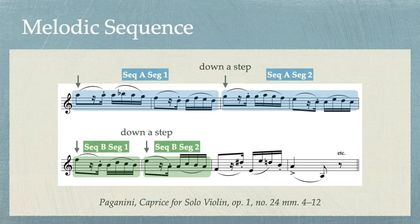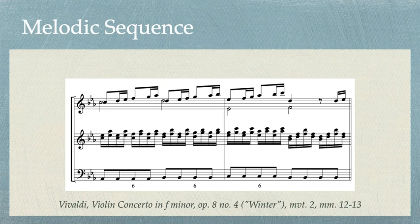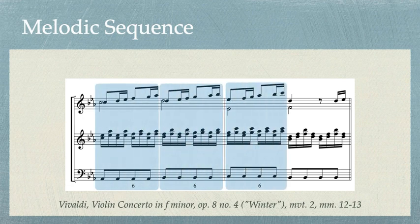Let's listen once more, now that we know what to listen for. Have a listen to this excerpt from Vivaldi's Violin Concerto in F Minor. See if you can hear and identify the sequence. Hopefully you noticed the sequencing in all of the voices for one half measure per segment, including the continuo voice. The melodic sequence is most prevalent in the upper voice, as we can see the melody sequencing up a step after each segment statement.